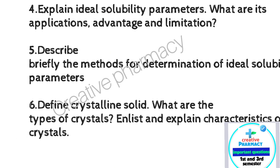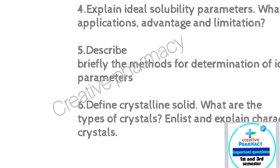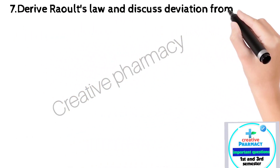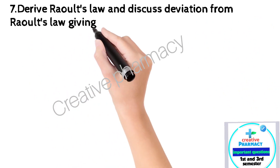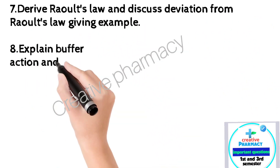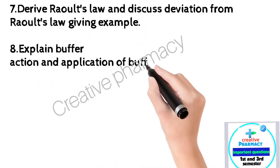Question 7: Derive Raoult's law and discuss deviation from Raoult's law giving example. Question 8: Explain buffer action and application of buffer in pharmaceutical and biological systems.